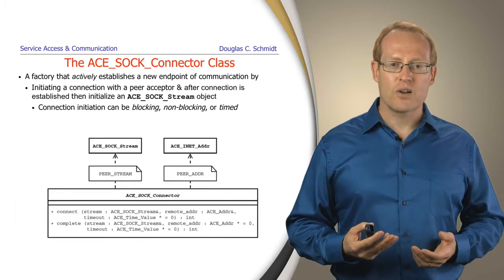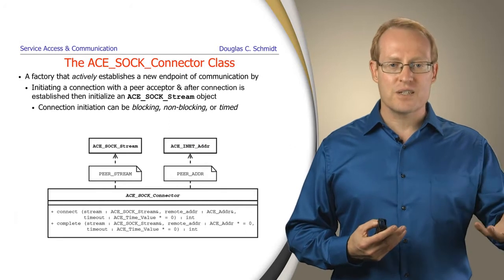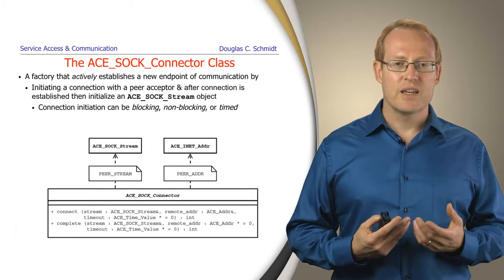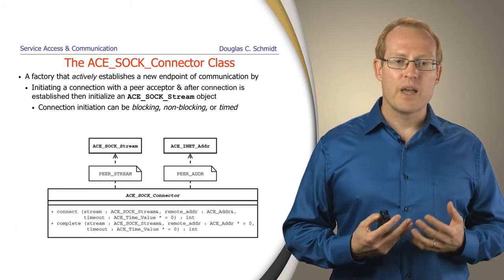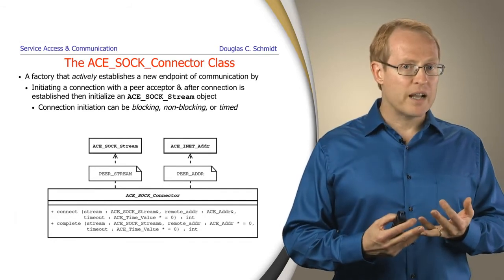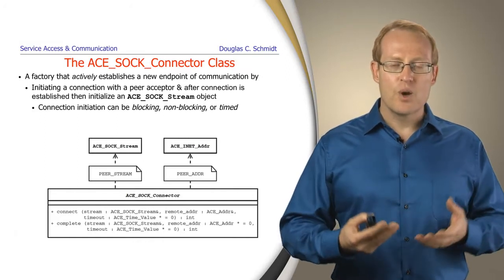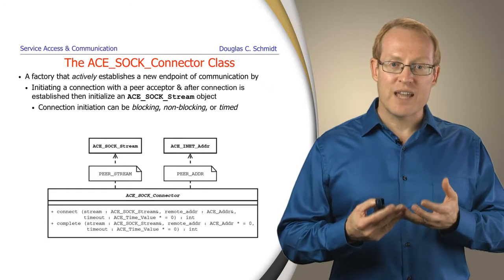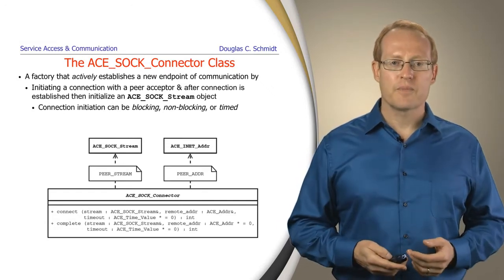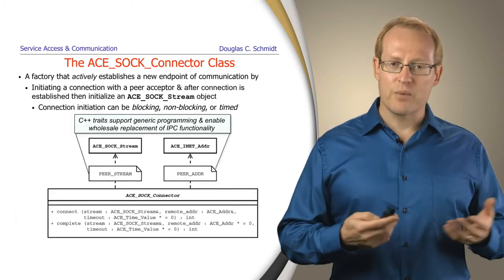To do this, we have a factory called the ACE_SOCK_Connector. And this factory is used to actively establish a new endpoint of communication by allowing a client, typically, to connect to a particular address. And this connection establishment can be done either blocking or non-blocking or in a timed manner. And once the connection is actually successfully established, what you get as a result is an initialized and connected ACE_SOCK_Stream, which can then be used to send and receive the data. That's the active side of the connection role. These, again, use traits just like we use for the SOCK_Stream.